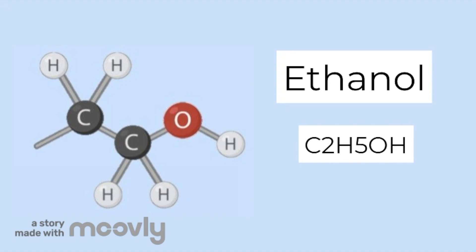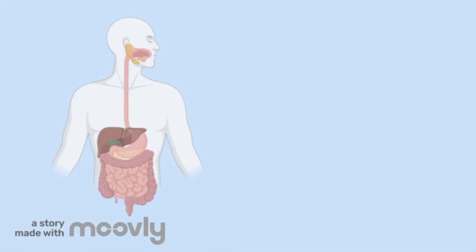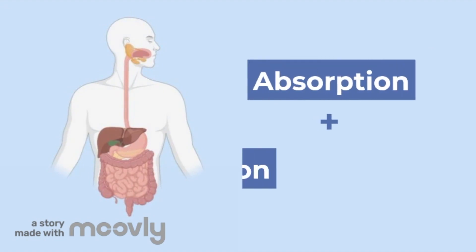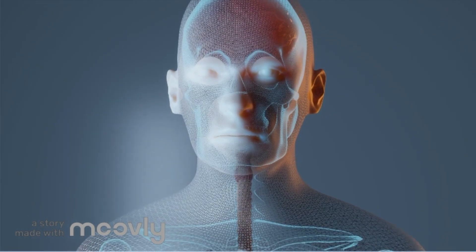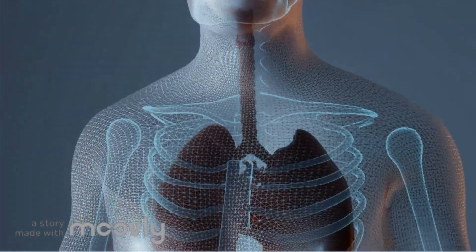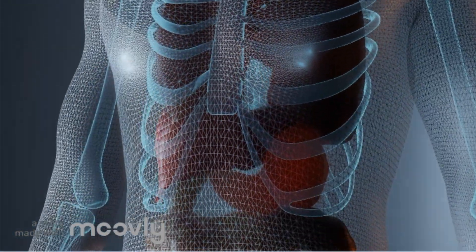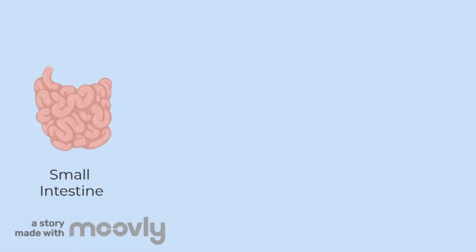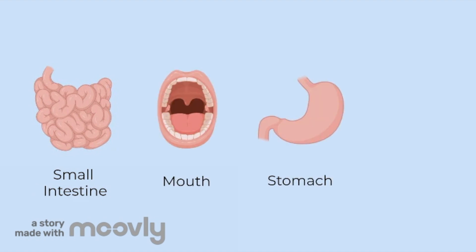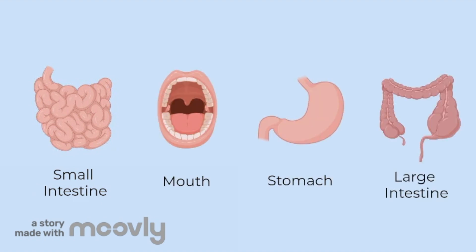So how does ethanol move through the body? There are two steps in this process: absorption and distribution. These processes involve the passage of a substance from the site of administration into the bloodstream for delivery to the body's fluids and tissues. Most absorption of ethanol occurs within the small intestine. However, small amounts may be absorbed in the mouth, stomach, and large intestine as well.